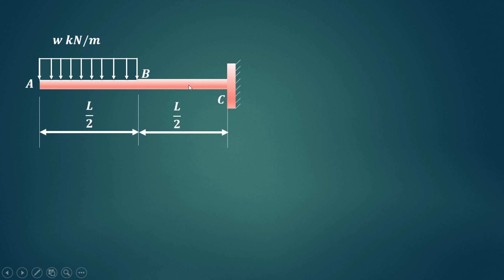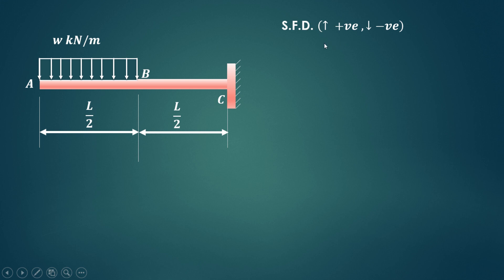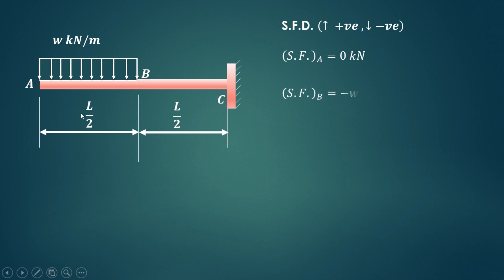The conventions we are using for the shear force diagram: upward forces are considered positive, whereas downward forces are considered negative. Shear force at A will be 0 because this is the starting point for the UDL. At B it will be W multiplied by L by 2, and as it is acting in the downward direction, we apply a minus sign, so it is minus WL by 2 kN.